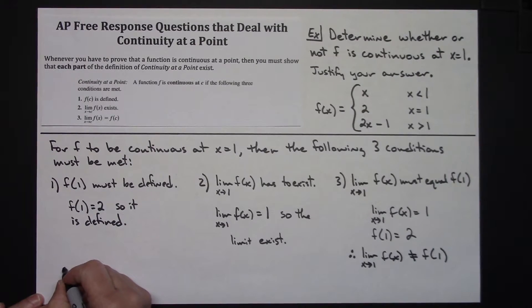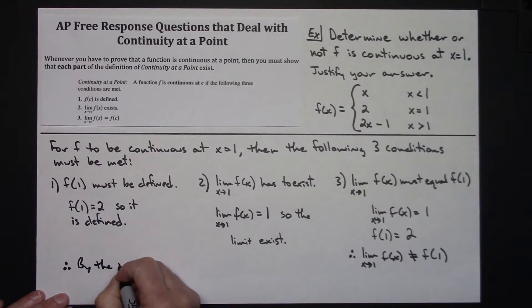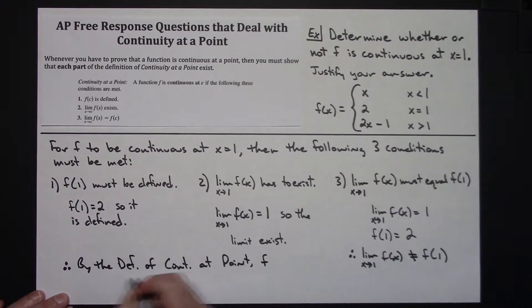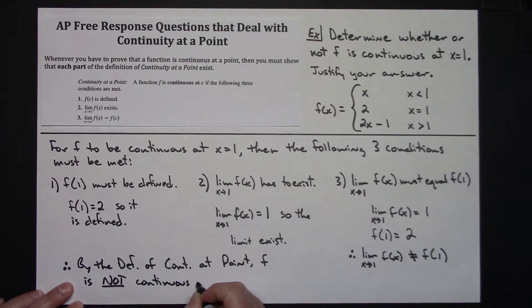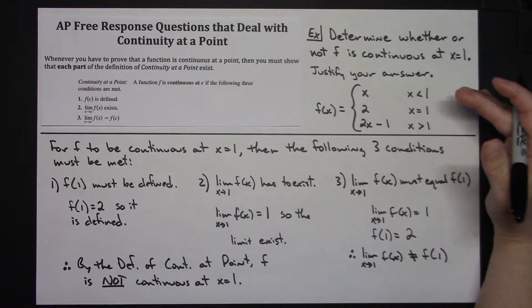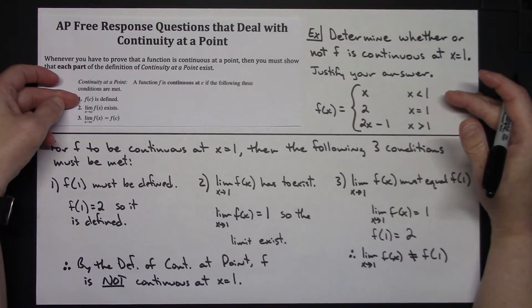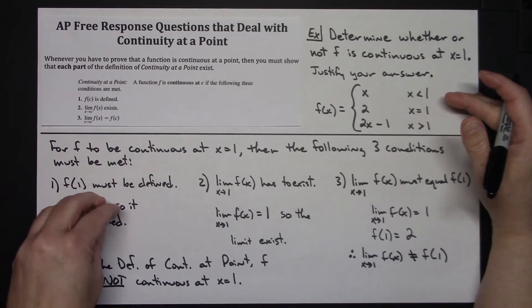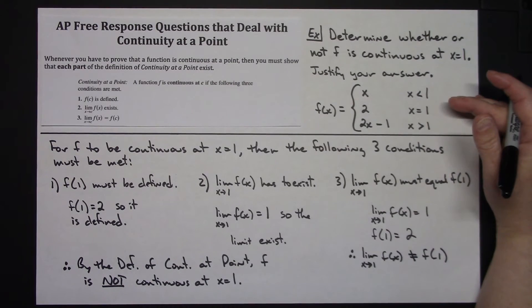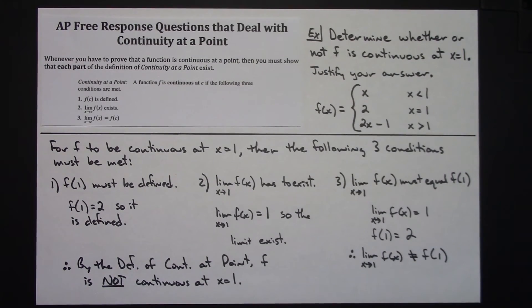Let's write an overall conclusion. Therefore, by the definition of continuity at a point, f is not continuous at x equals one. I've determined whether or not f was continuous at x equals one and justified the answer by writing everything out. I took the definition of continuity at a point, addressed all three parts individually, drew conclusions from each, and then determined using the overall definition whether it was continuous or not. That's a nice, well-written answer for an AP free response question dealing with continuity.